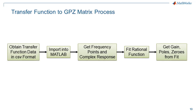Here is an overview of the process for creating a GPZ matrix from transfer function data. The transfer function data for the CTLE configurations are obtained from design data, preferably in CSV format. The data is imported into MATLAB. The data is transformed, if necessary, to frequency points and real-imaginary complex response data. A rational function is fit to the data, and gain, poles, and zeros are extracted from the fit.